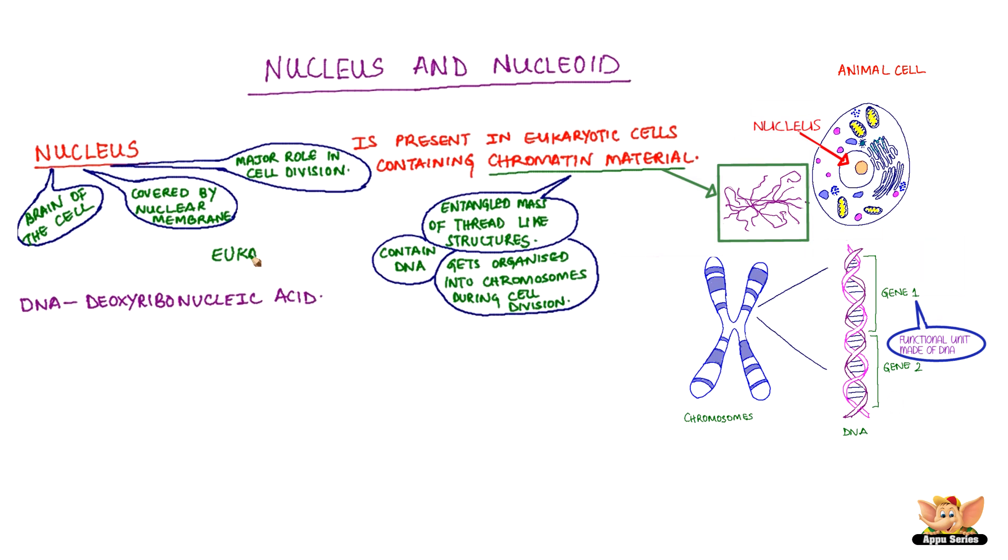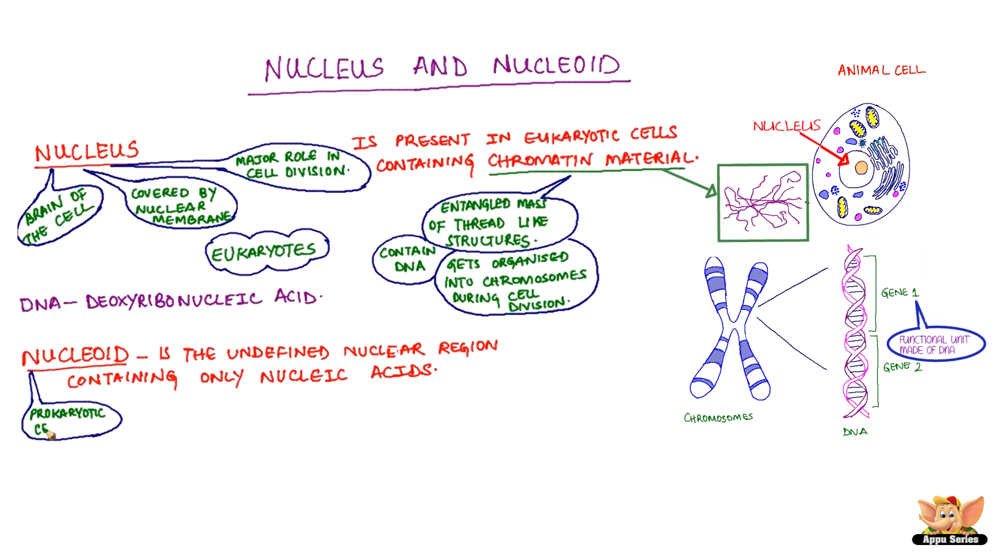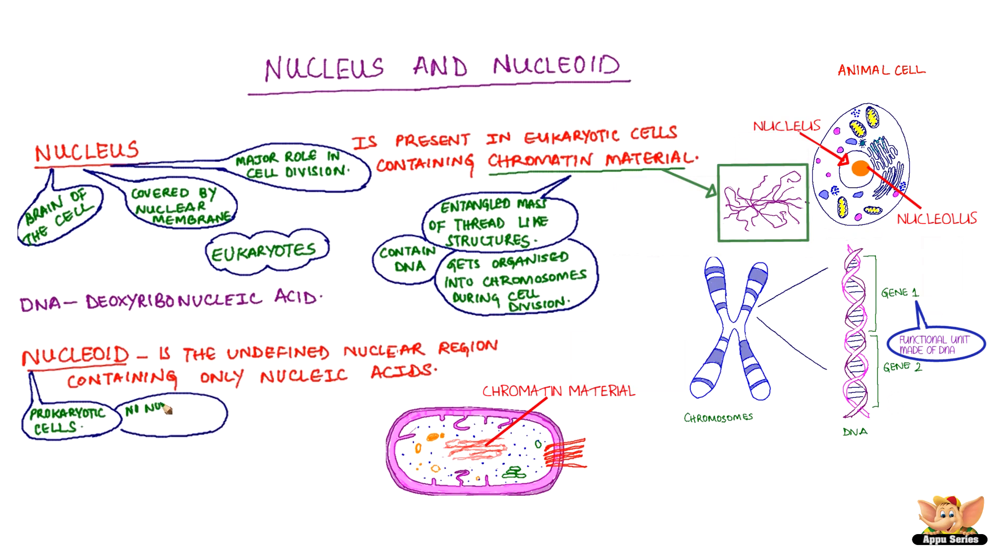We saw that the nucleus is present in eukaryotic cells only. So, how is it in prokaryotic cells? In the case of a prokaryotic cell, the nuclear region is undefined and contains only nucleic acids called as nucleoid. There is no nuclear membrane.